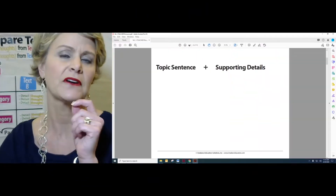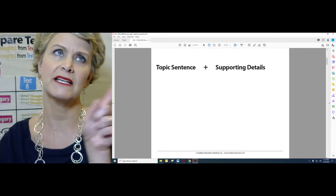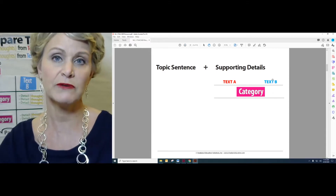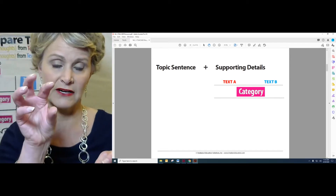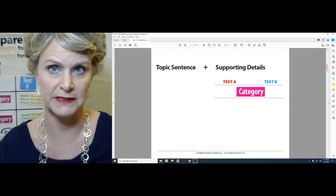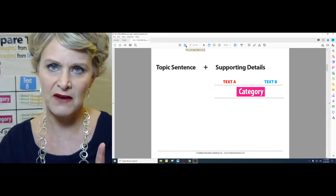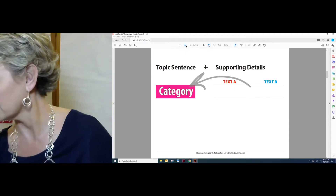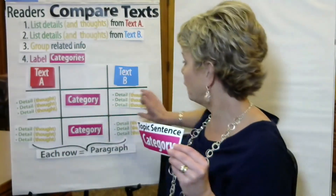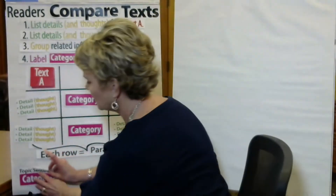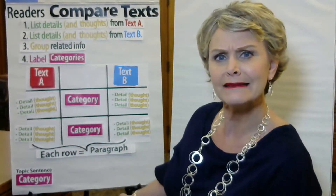What's a paragraph again? A paragraph is a topic sentence plus supporting details. So let's look on the screen. If we're supposed to write a paragraph per row and every paragraph has a topic sentence and supporting details, where does that come from? On your t-chart you have details for text A, details for text B, and the category in the middle — for example, main characters. So the topic sentence comes from the category. Turn that word or phrase into a sentence — there's your topic sentence.